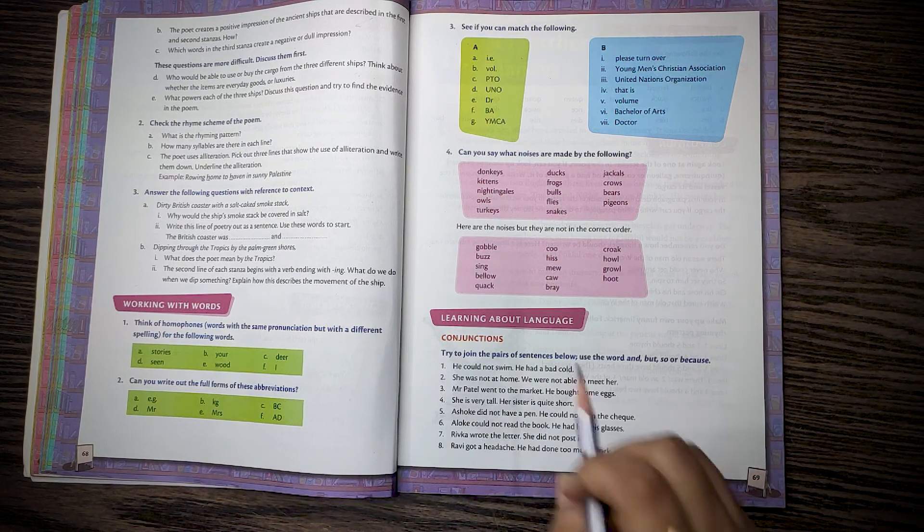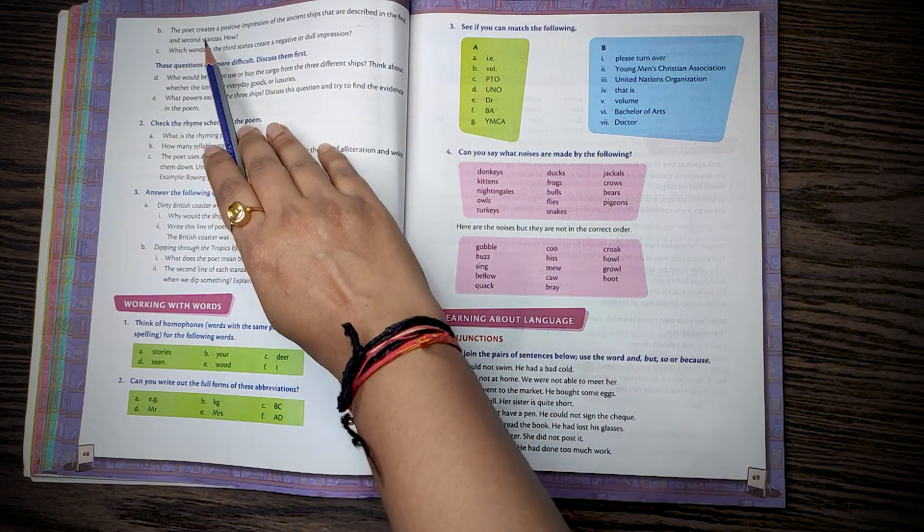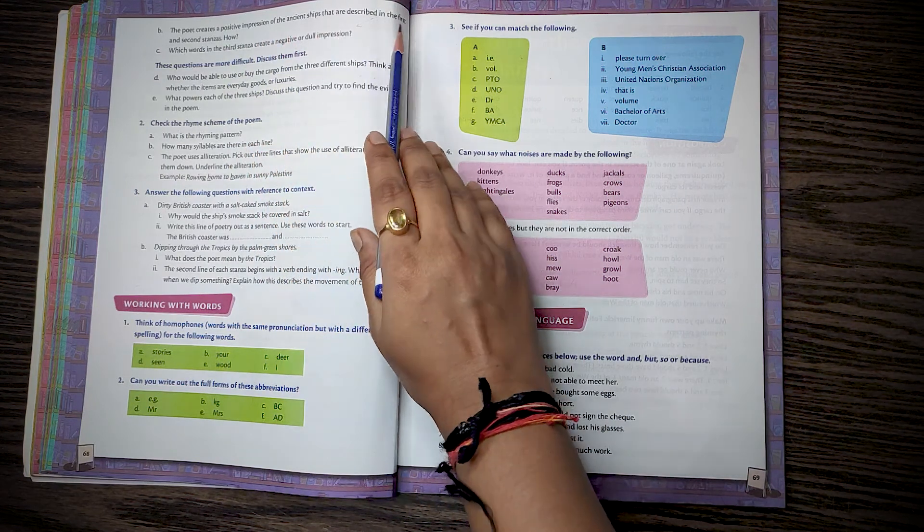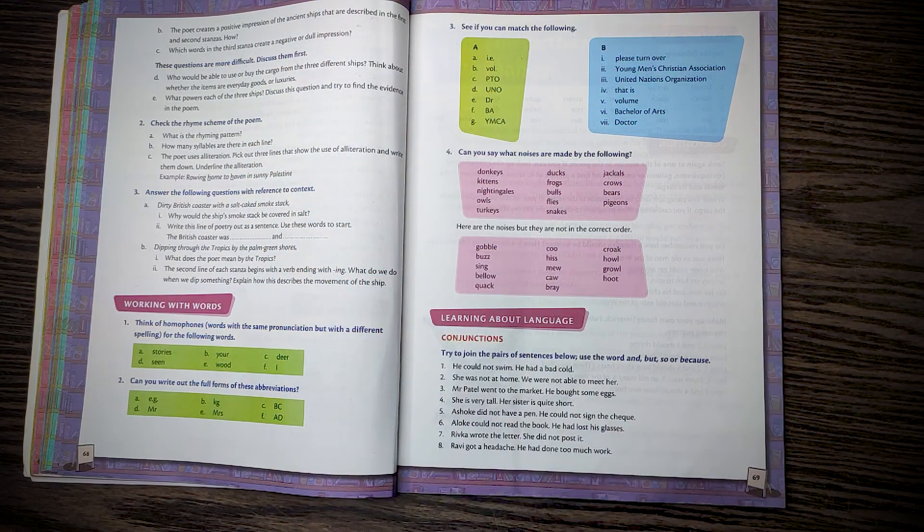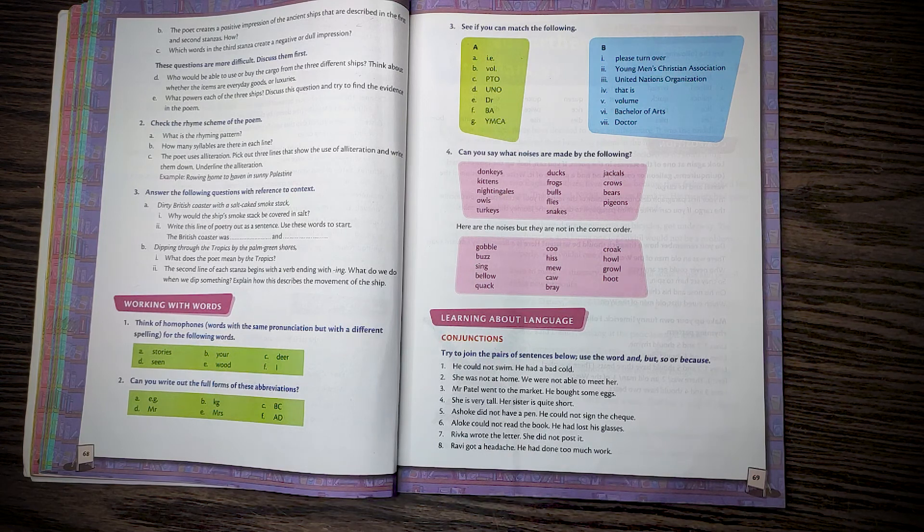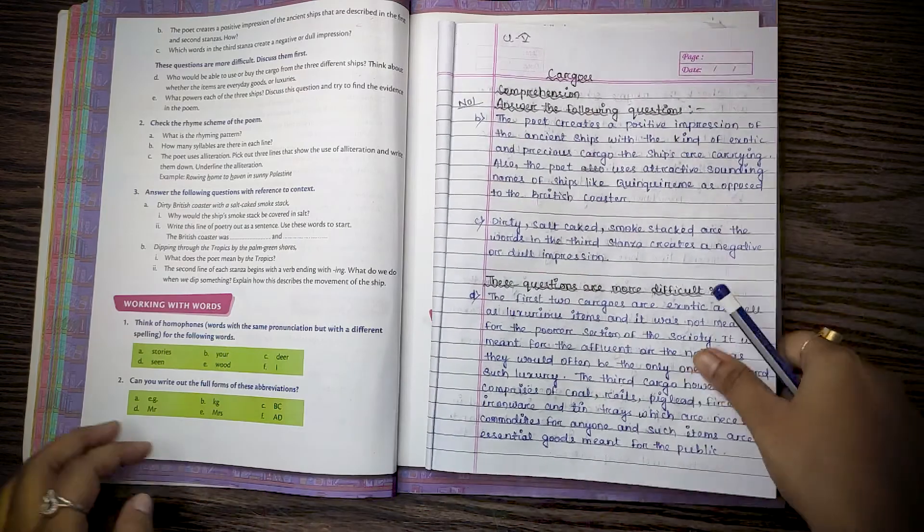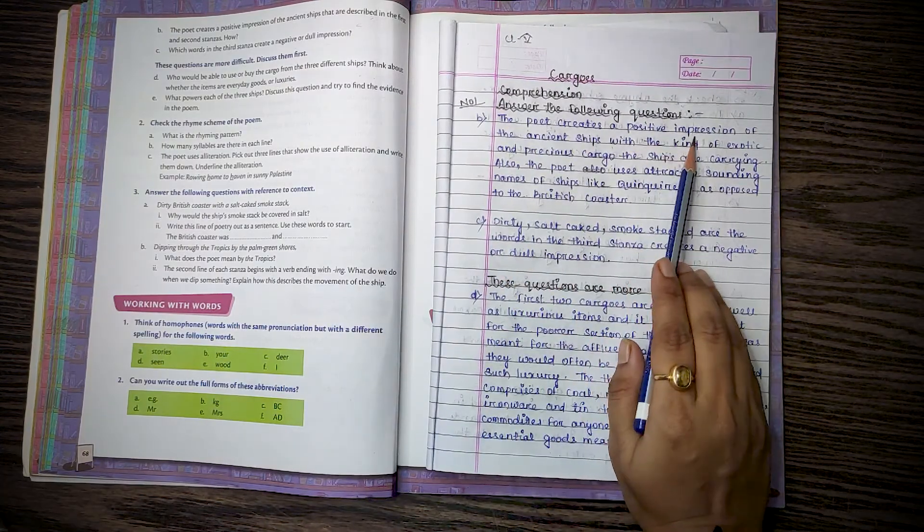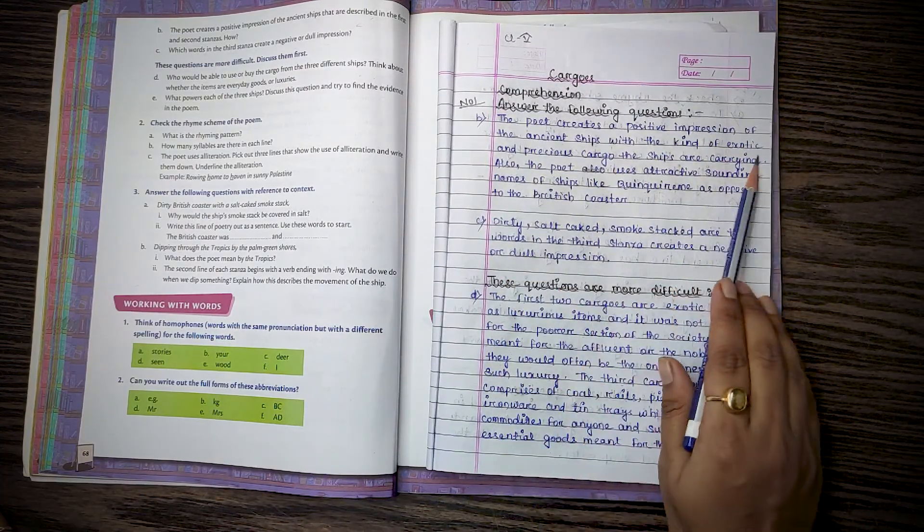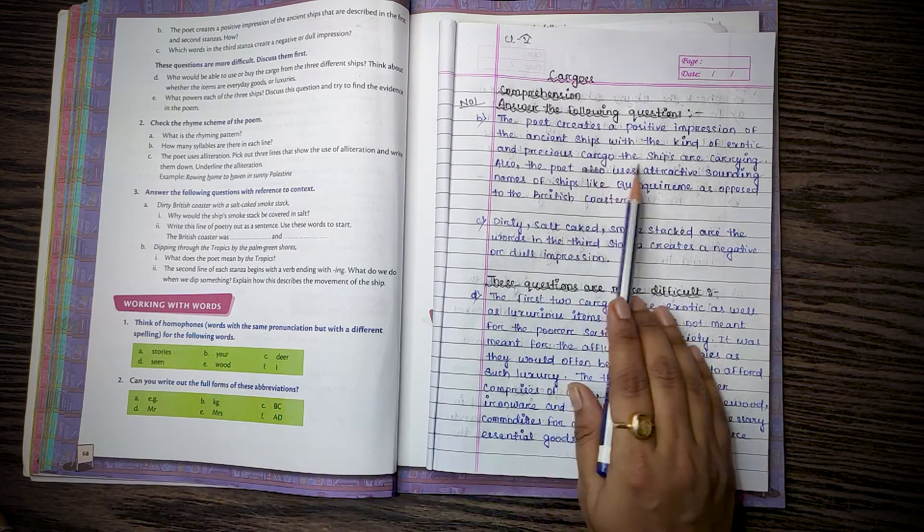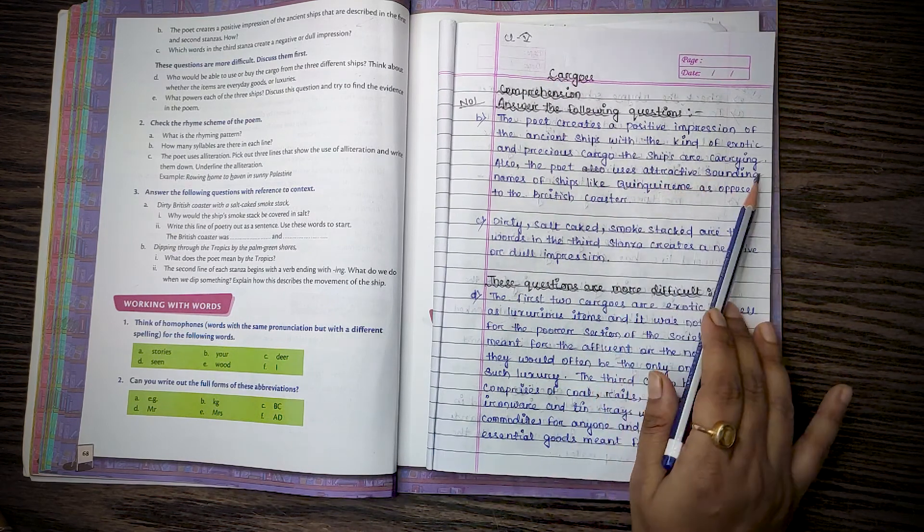Comprehension number 1, curve number 2. The poet creates a positive impression of the ancient ships that are described in the first and second stanzas. How? Here is the answer. The poet creates a positive impression of the ancient ships with the kind of exotic and precious cargo the ships are carrying.